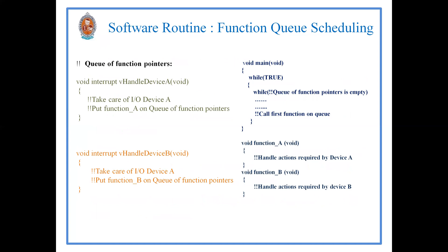Now we will see how to write the pseudo code for this function queue scheduling architecture. This is the software routine. First, you maintain a queue of function pointers. All the function pointers will be written onto the queue, and the main function will read these function pointers from the queue and handle each task. Suppose you have two devices — device A and device B — written as interrupt handlers. For device A, you write: void interrupt handle_device_A.